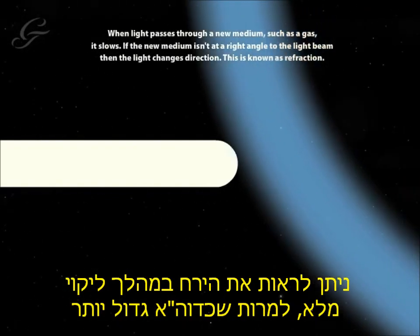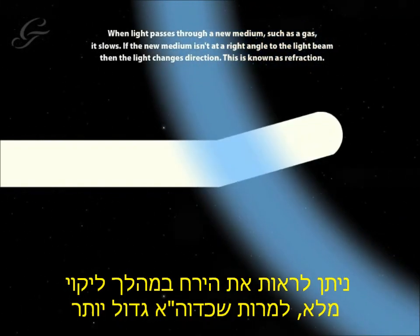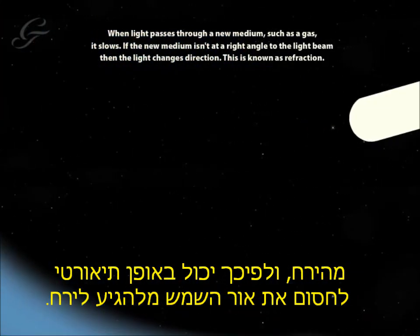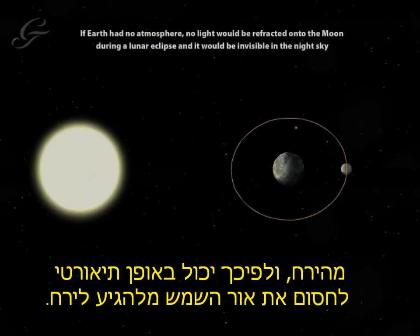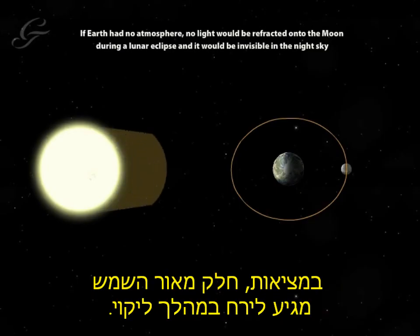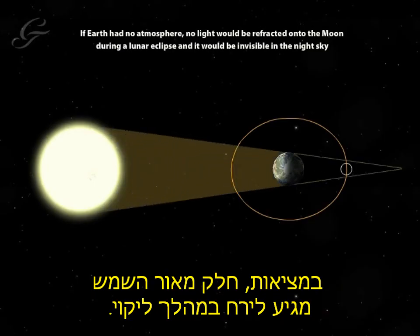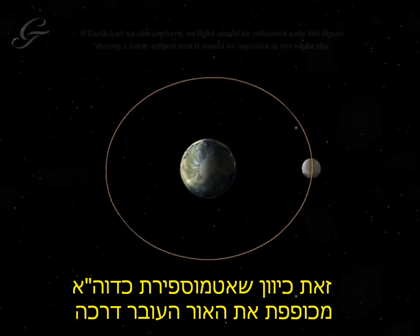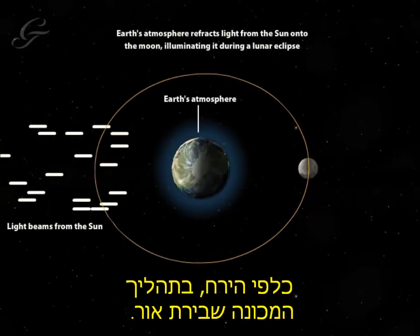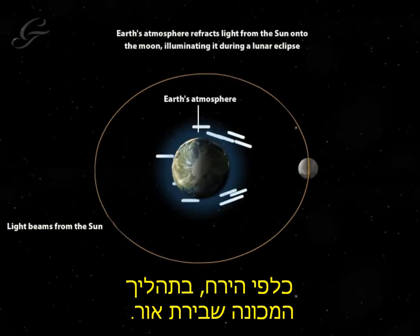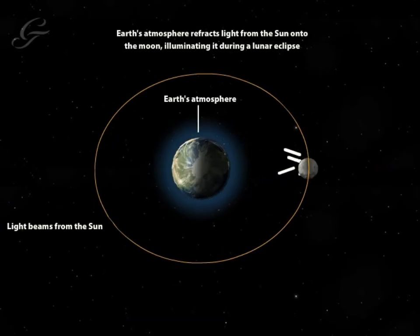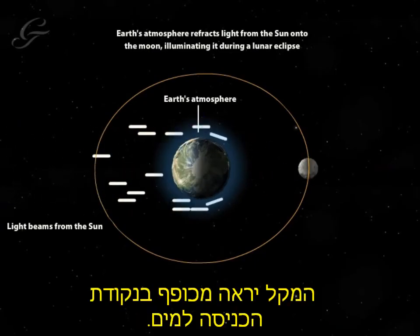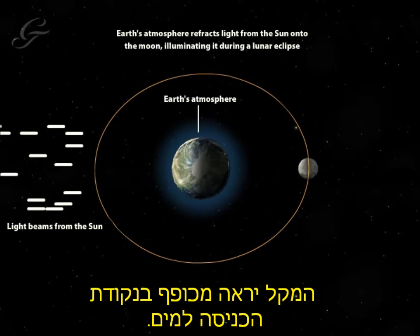A total lunar eclipse is visible, even though the Earth is much bigger than the moon and can, in theory, block all of the sun's light from reaching the moon. In reality, some of the sun's light reaches the moon during an eclipse. This is because sunlight passes through the Earth's atmosphere, which bends it towards the moon in a process called refraction. You can see refraction in action if you lower a stick into water — the stick will appear to bend at the point it enters the water.